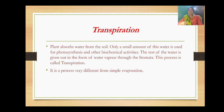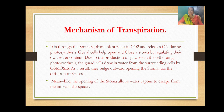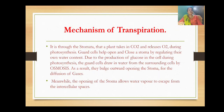Transpiration is a process very different from simple evaporation. In transpiration, the main role is played by the stomata because all the exchange takes place through the stomata. It is through the stomata that a plant takes in carbon dioxide and releases oxygen. Plants take in carbon dioxide for photosynthesis to manufacture their food, and they release oxygen because oxygen is the end product of photosynthesis.